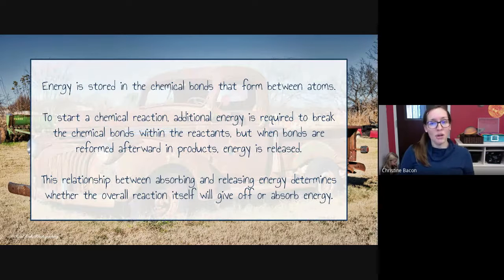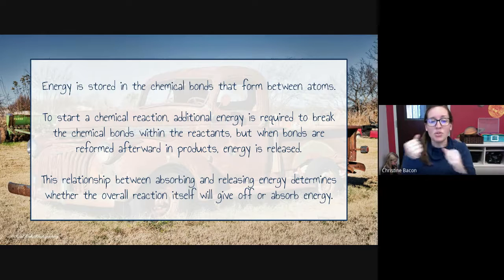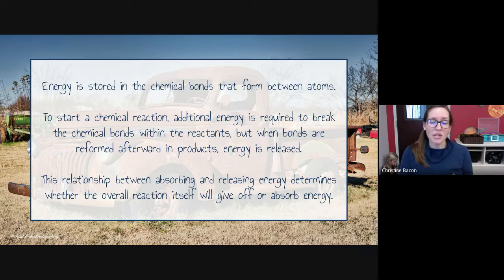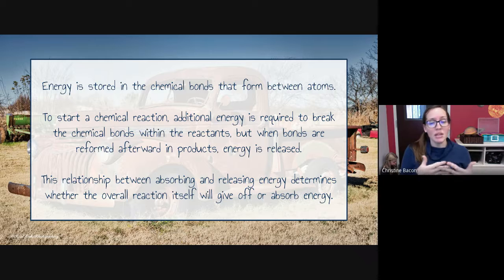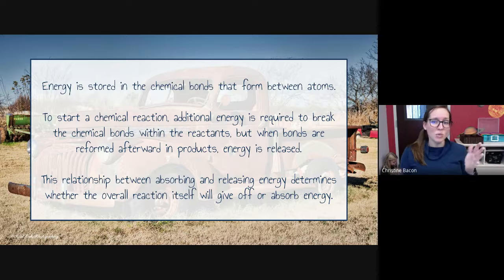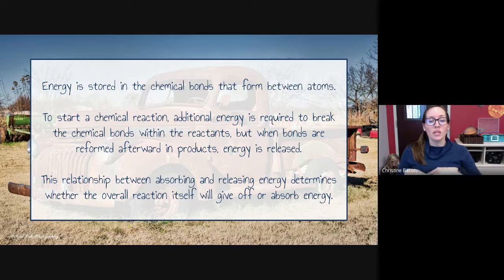Energy is stored in the chemical bonds that form between atoms. To cause a chemical reaction to continue, those bonds have to break. You need energy to break those bonds and enough energy to reform new bonds. When those bonds are reformed in the products, they actually release additional energy. That balance between energy absorbed and energy released determines whether a reaction is endothermic or exothermic.